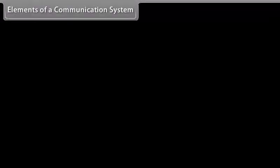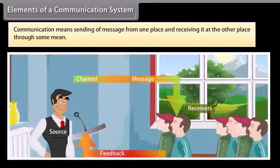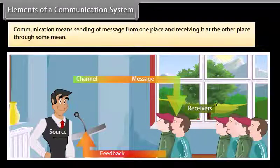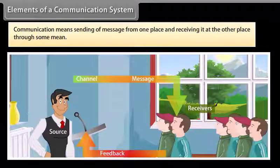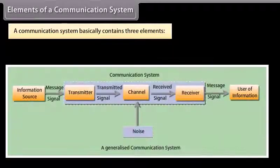Elements of a communication system. Communication means sending of a message from one place and receiving it at the other place through some medium. A communication system basically contains three elements.